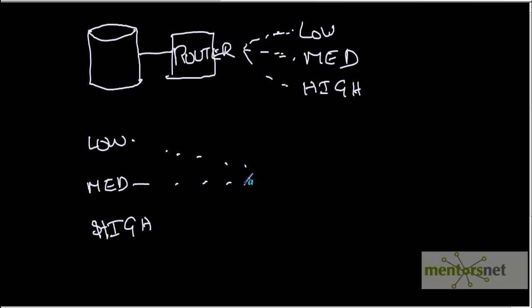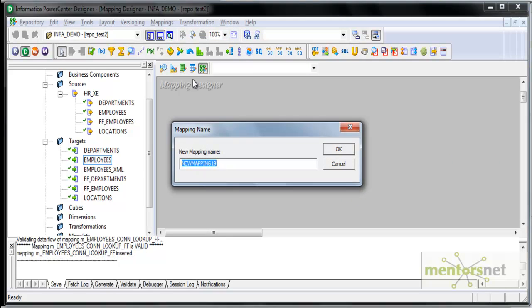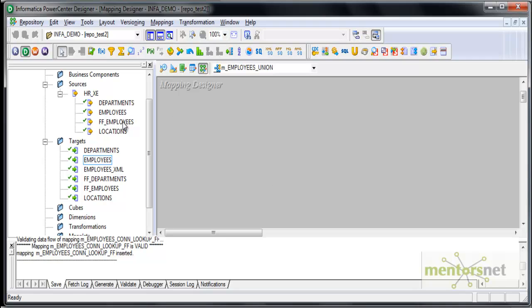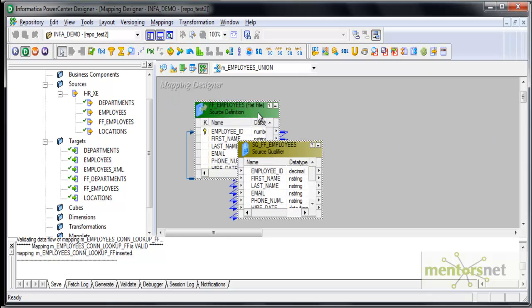So what transformation will help us merge all three into one target table? Let's go to the Informatica tool. I'm going to create a mapping called M_employees_union. I will pull employee source flat file sources.